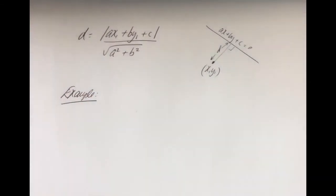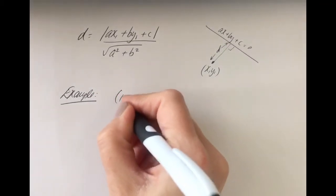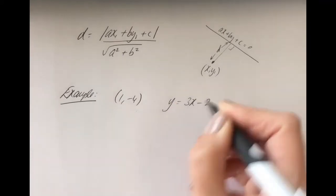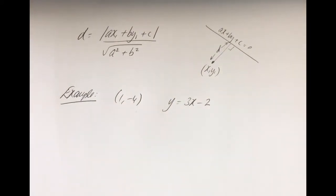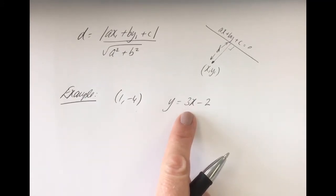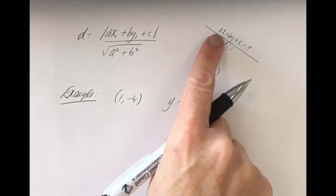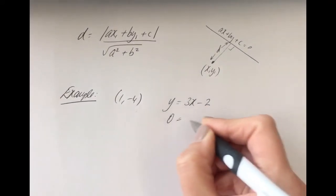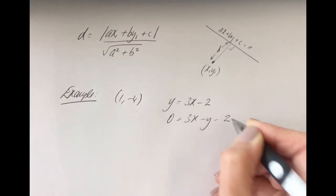Let's find the distance between the point (1, -4) and the line y equals 3x minus 2. If you feel confident to have a go at this formula, press pause. If not, listen up and we'll go through it now thoroughly. The first thing we need to do is adjust the equation of the line — it's not quite in the form ax plus by plus c equals 0, so I'm going to do a little bit of rearranging. I'll take away the y from both sides.